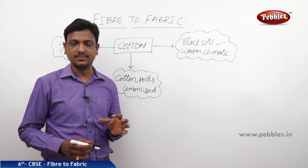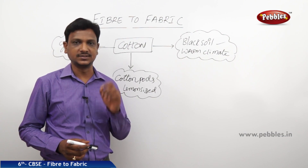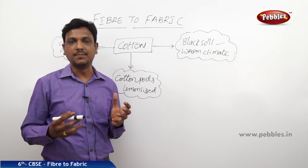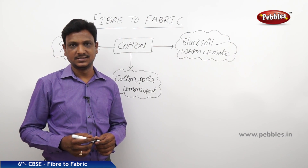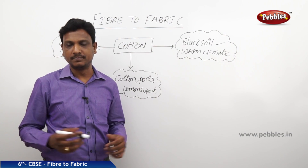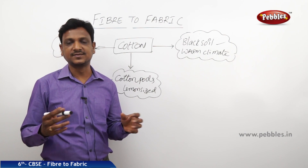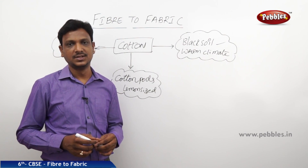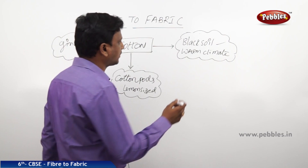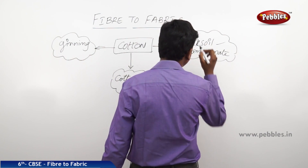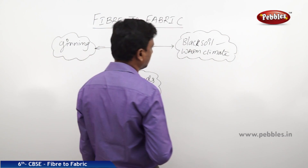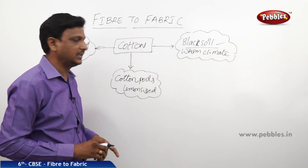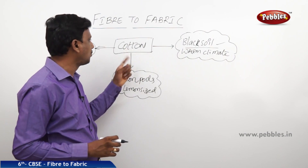Now let us look at the natural fibers. The first natural fiber is cotton. Cotton is obtained from the cotton plant. Where do these crops grow? Which type of soil is needed to grow cotton? The soil needed is black soil. It is suitable for the growth of cotton. The climate should be warm. So warm climate and black soil are the two requirements to grow cotton.